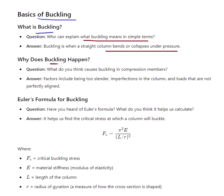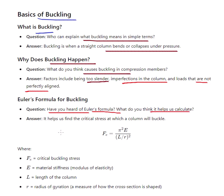Why does buckling happen? Factors include being too slender, imperfections in the column, and loads that are not perfectly aligned. Regarding the Euler formula: it helps us find the critical stress at which a column will buckle — Fe equals pi squared E divided by (L/R) squared — the critical stress at which the column will buckle.